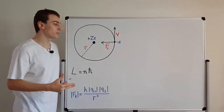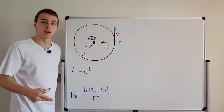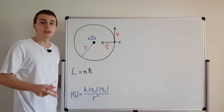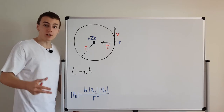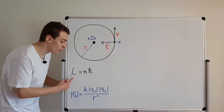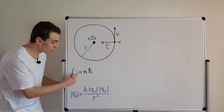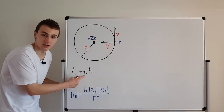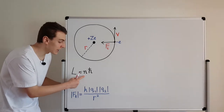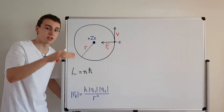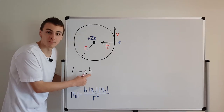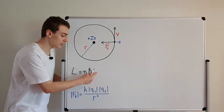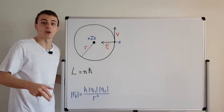In modern quantum mechanics the picture is more complicated, but in the Bohr model we can think of it as a mini solar system with quantum mechanical properties. One of those properties is angular momentum quantization — angular momentum L comes in discrete chunks, only integer multiples of h-bar, where h-bar is Planck's constant over two pi. We derived this expression in the previous video of this playlist.